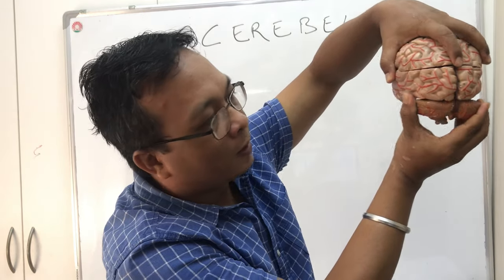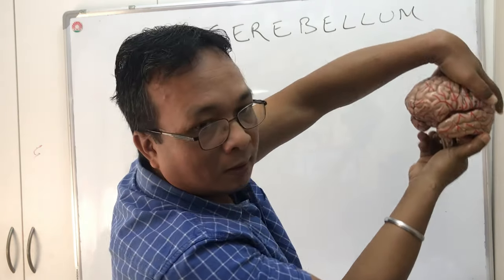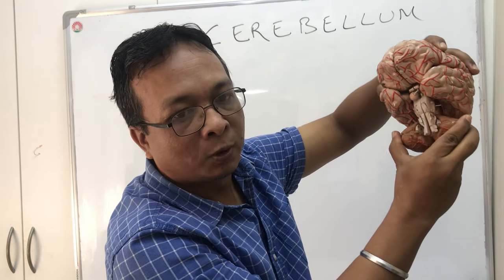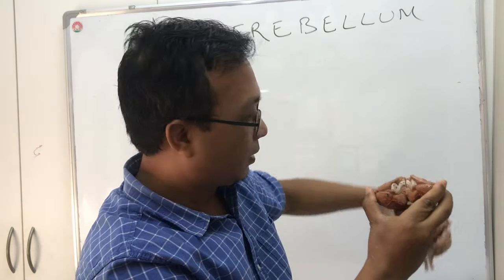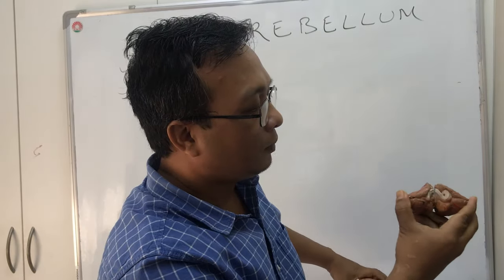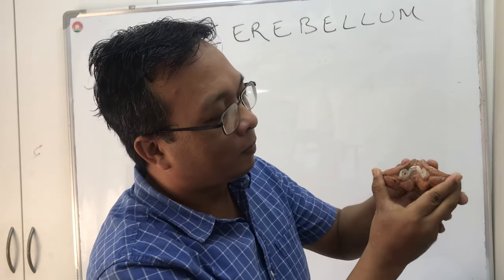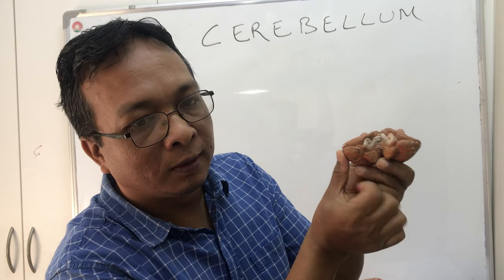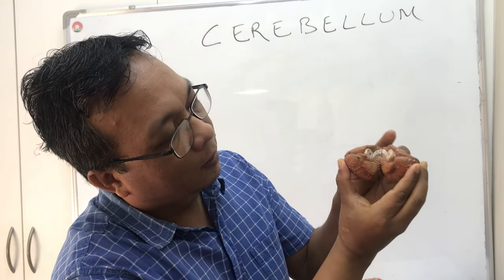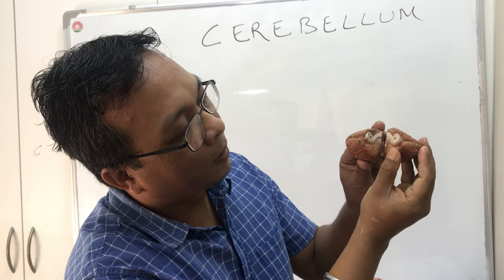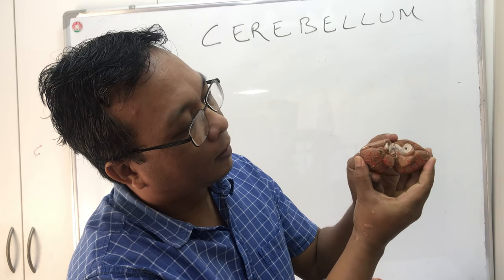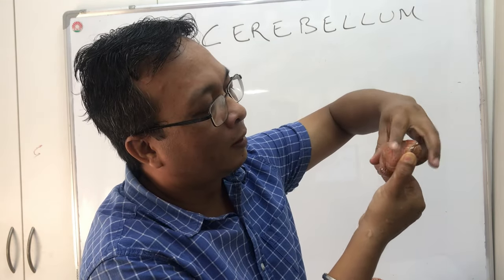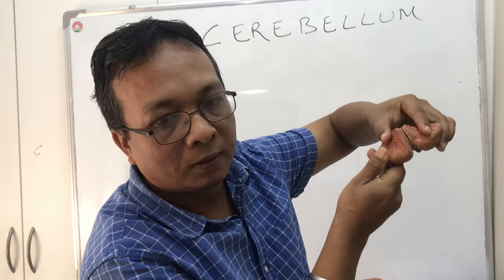I've brought the cerebellum out. This is the posterior side and this is the anterior side. Looking at it carefully, these are the two left and right cerebellum hemispheres. This is the anterior side; from the back it will look like this.